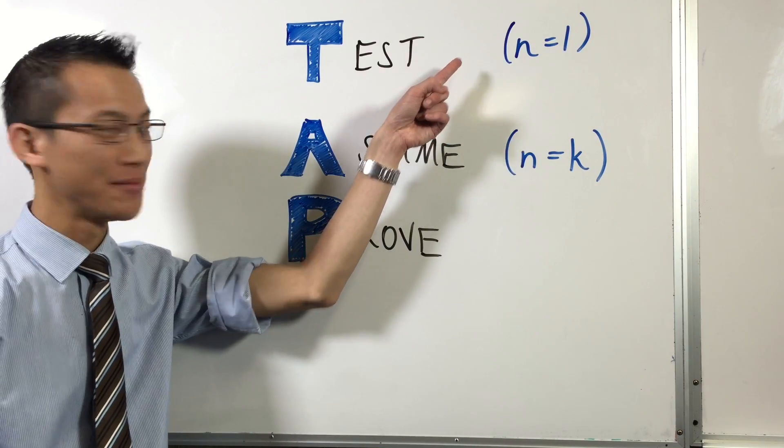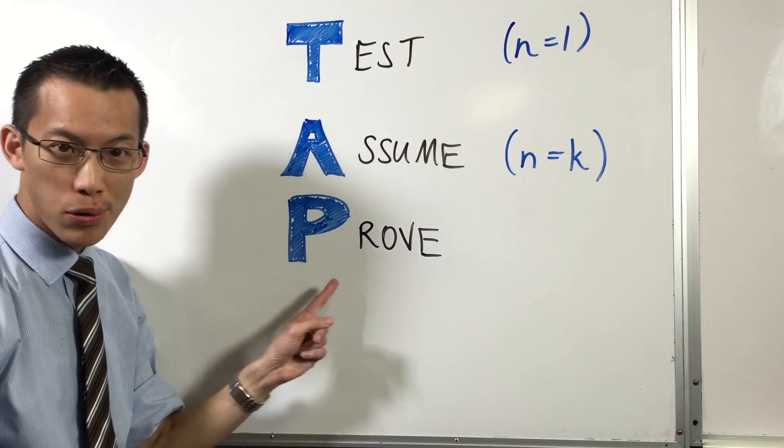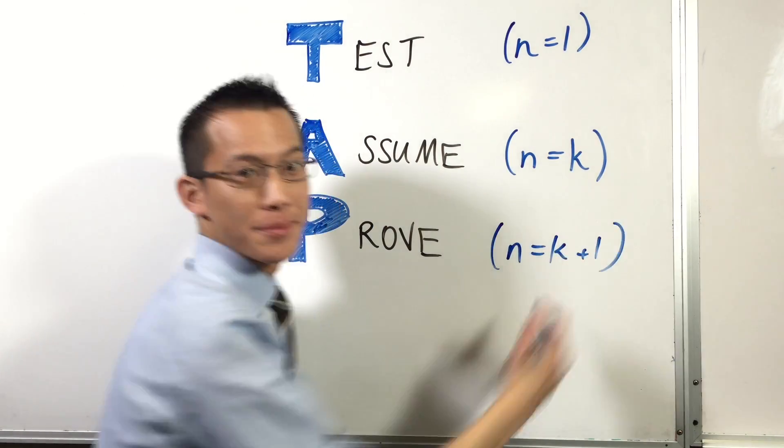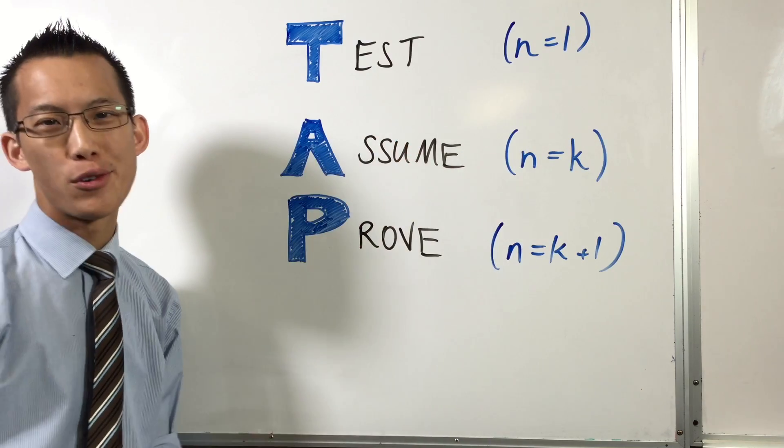Now we're ready to make the magic happen. We've tested for n equals 1. We've assumed it's true for n equals k, and now it's time to prove that the statement's true for n equals k plus 1. In other words, if one will fall over, then the next one will fall too.